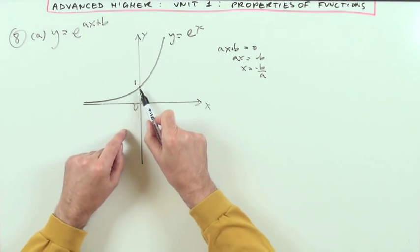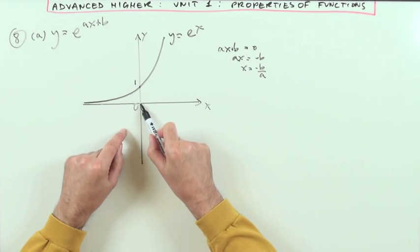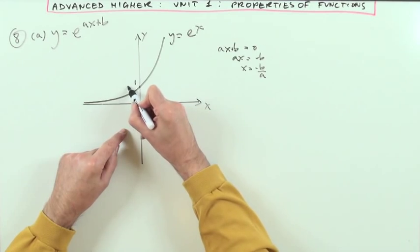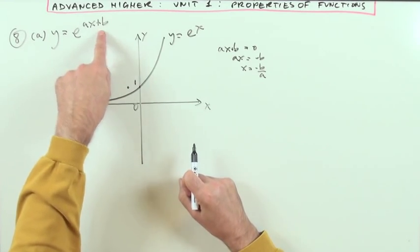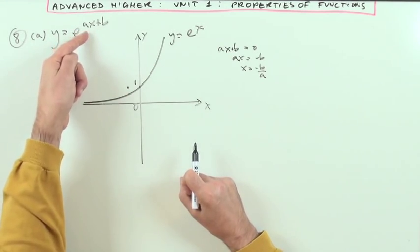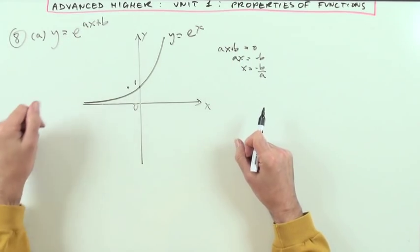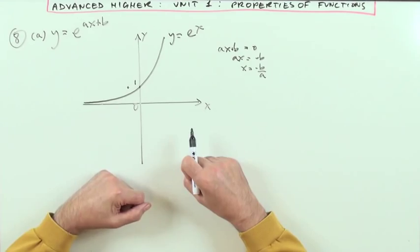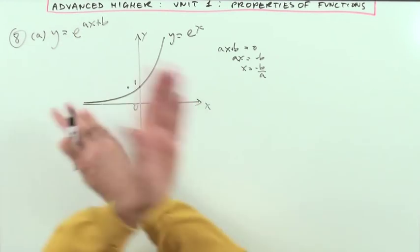Which means the answer one, which belonged to zero, will now belong to negative b upon a. So that's going to shift back to wherever that is, and you'd expect that. Plus b means it should go back, and then a means divide it by a, if that's a number greater than one, or expand it if it's a number less than one. And if it was negative, of course, it would flip it over.